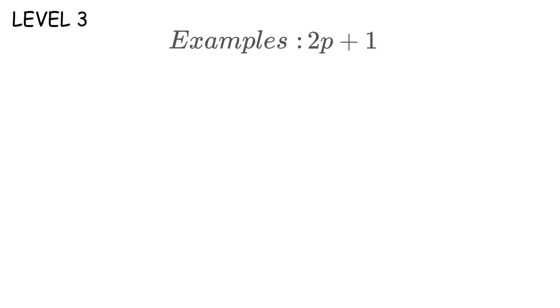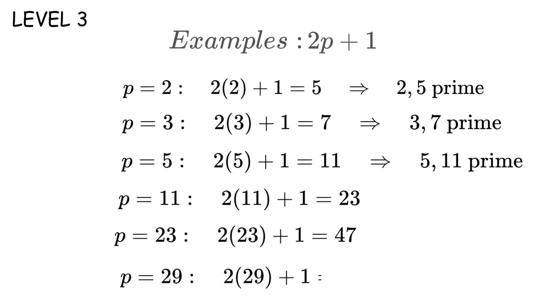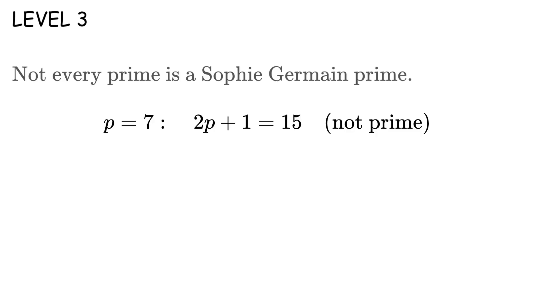Let's try some examples. Start with p equals 2. So 2 times 2 plus 1 equals 5. Both 2 and 5 are prime. Now try p equals 3. 2 times 3 plus 1 equals 7. Both prime. Try p equals 5. 2 times 5 plus 1 equals 11. Both prime. Keep going. p equals 11 gives us 23. p equals 23 gives us 47. p equals 29 gives us 59. Not every prime is a Sophie Germain prime. Like p equals 7 gives us 15, which isn't prime. And p equals 13 gives us 27. Also not prime.